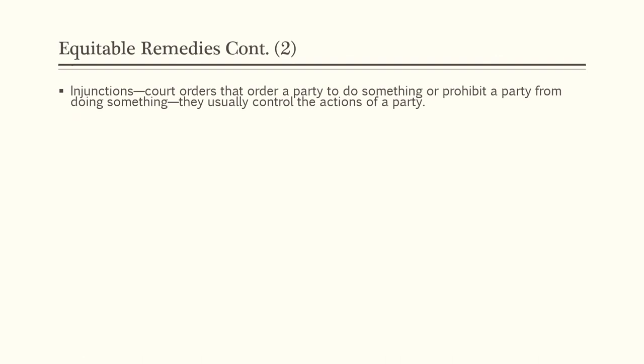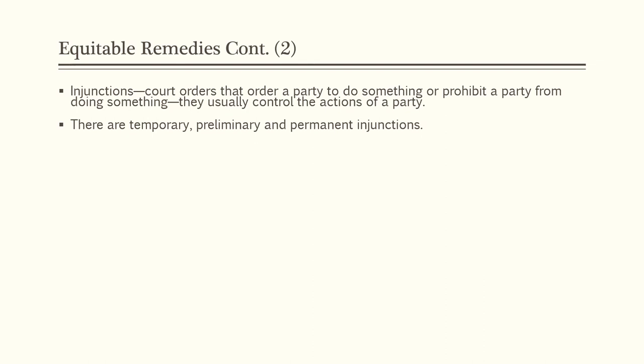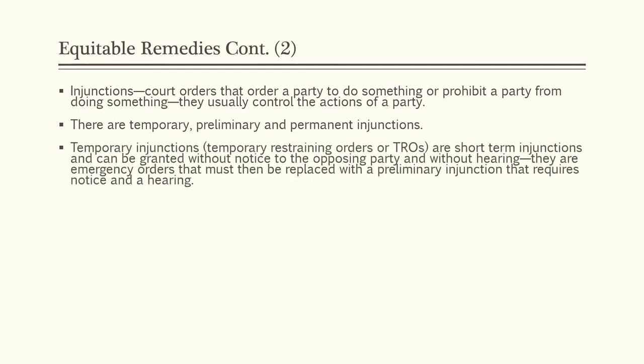The next equitable remedy is injunctions — court orders that order a party to do something or prohibit a party from doing something. There are temporary, preliminary, and permanent injunctions. Temporary restraining orders, or TROs, are short-term injunctions that can be granted without notice to the opposing party and without a hearing. They are emergency orders that must then be replaced with a preliminary injunction requiring both notice and a hearing. You commonly see TROs in stalking or child protection cases, and rarely in contract cases unless someone is actively causing ongoing harm.